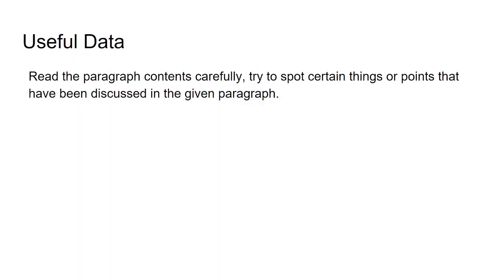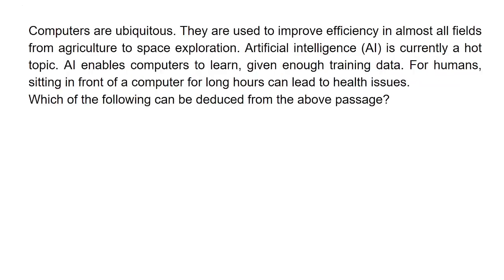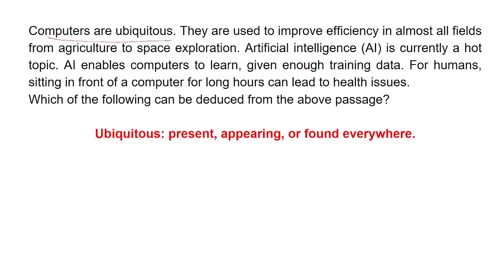One English paragraph is given and we have to answer questions based on it. I will discuss a few key points: read the paragraph contents carefully, and try to identify the things or points that have been discussed in the given paragraph. Now let's solve this problem. The given paragraph starts with 'computers are ubiquitous' — here ubiquitous means present, appearing, or found everywhere.